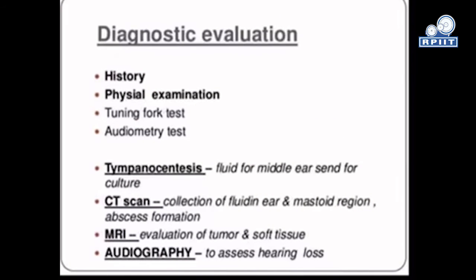Next is the diagnosis and evaluation of otosclerosis. First, we collect the history of the patient, including surgical and medical history. Then a physical examination is performed along with tests such as the tuning fork test and audiometry test. The tuning fork test, also known as the Schwabach test and Rinne test, involves the doctor striking a tuning fork and placing it on the mastoid bone behind one ear. When you can no longer hear the sound, you signal the doctor, who then moves the tuning fork next to your ear canal. The doctor records the length of time you hear each sound.